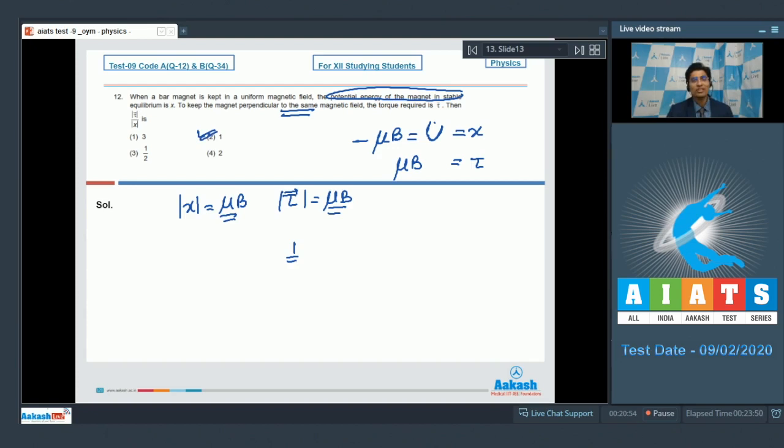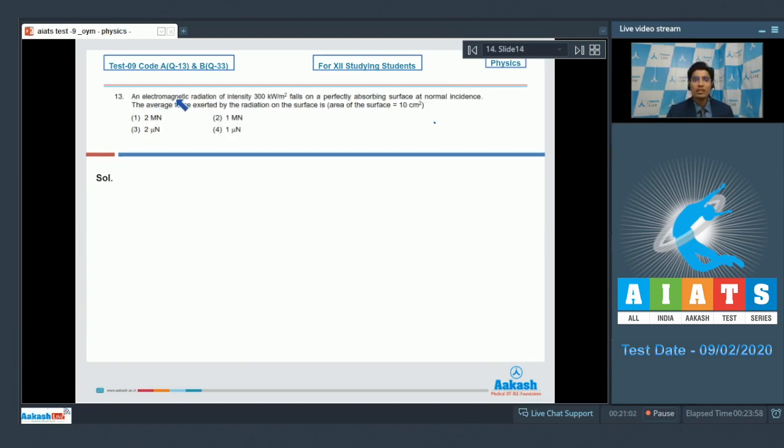Now let us proceed and solve the next question, which is question number 13. As per question number 13, an electromagnetic radiation of intensity 300 kilowatt per meter square falls on a perfectly absorbing surface at normal incidence. The average force exerted by the radiation on the surface is: